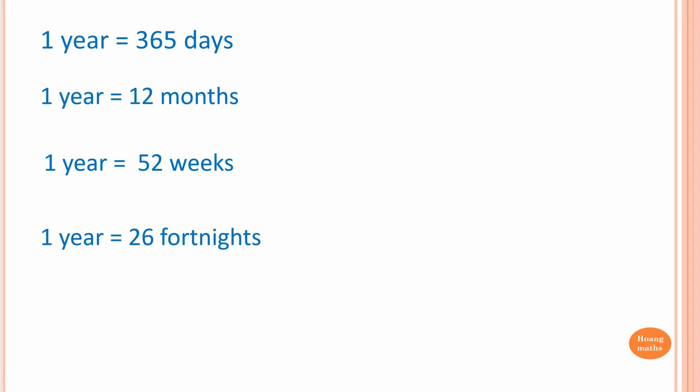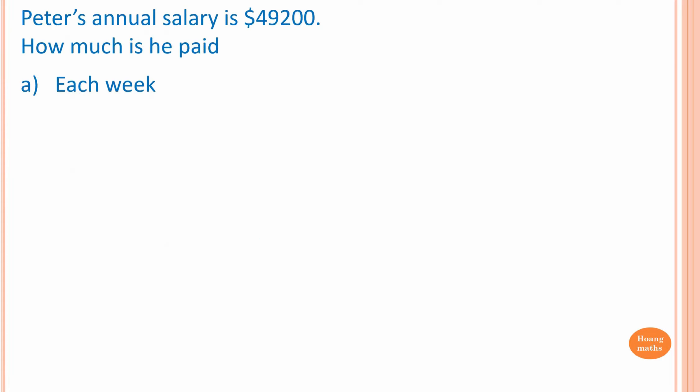So in another word, one fortnight is equal to two weeks. For example, Peter's annual salary is $49,200. How much is he paid each week, each month, each fortnight, and each hour if he works 38 hours each week?